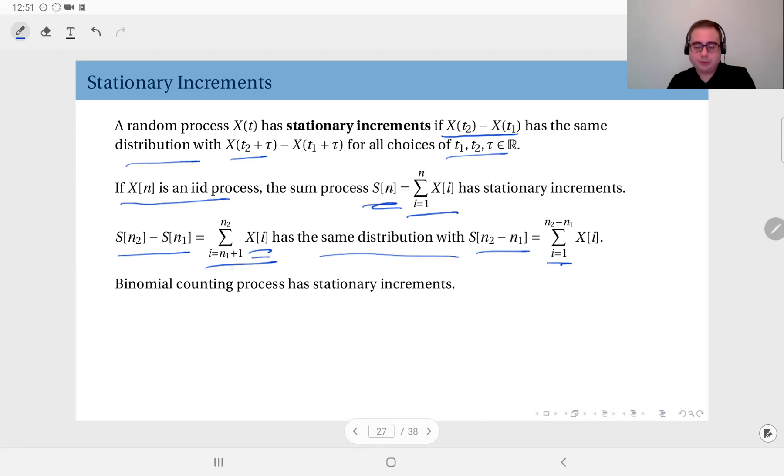Sum from i equals 1 up to n2 minus n1 of xi's. Simply because you have n2 minus n1 xi's here which are all independent and have the same distribution, and it's the same here. N2 minus n1 xi's. They are all iid. Therefore, this sum and this sum will have the same distribution.